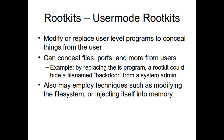User mode rootkits only replace user-level programs. A CPU has multiple rings — user mode is ring 3, kernel mode is ring 0. You have to have special permission to switch between them, they run in separate sections of memory, and it's a low-level protection mechanism. User mode rootkits can conceal files, ports, and other things from the user. It prevents attackers who are not determined from just getting lucky.